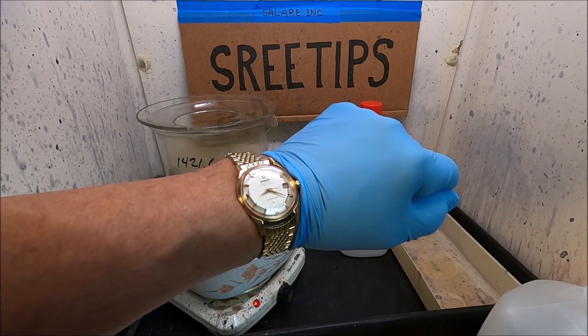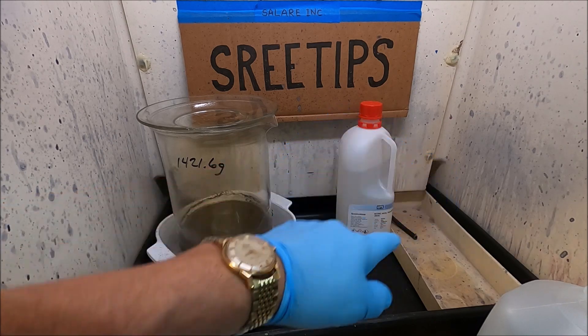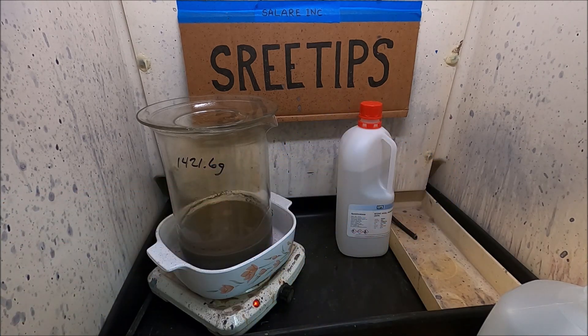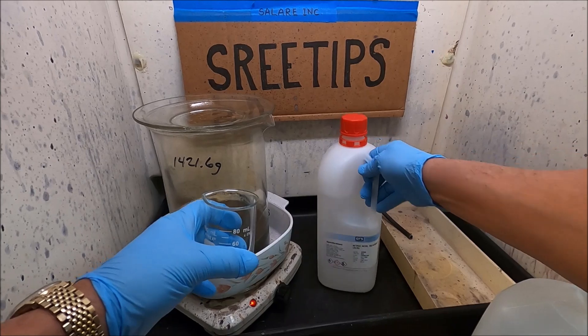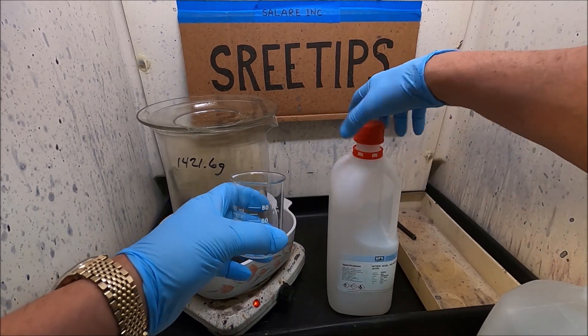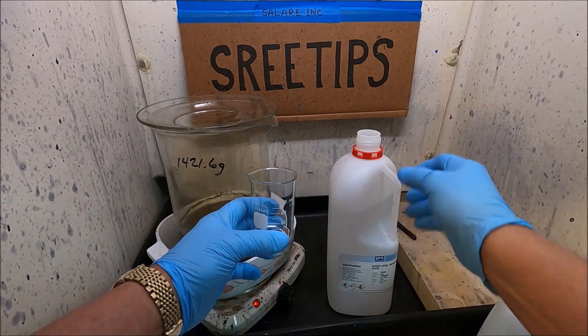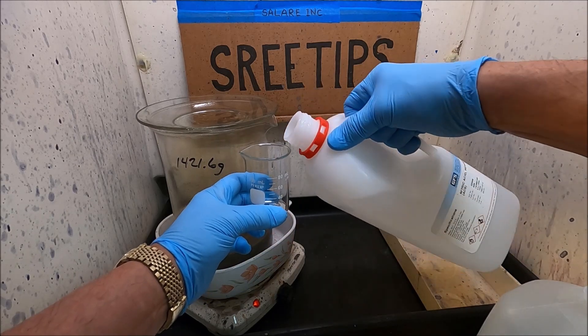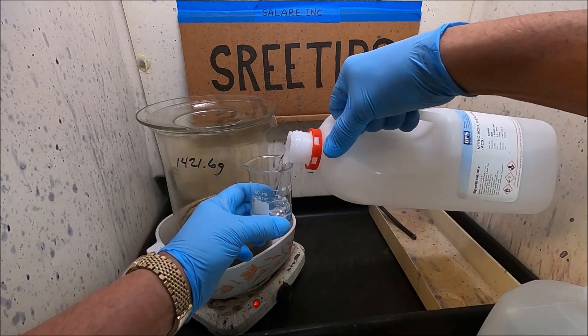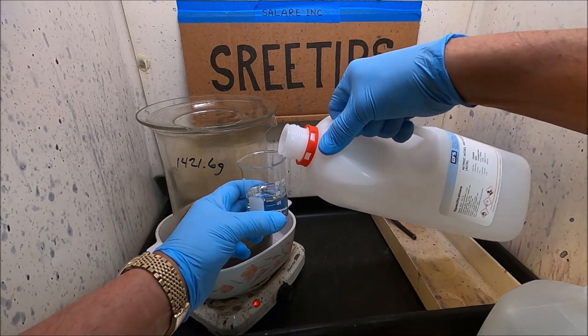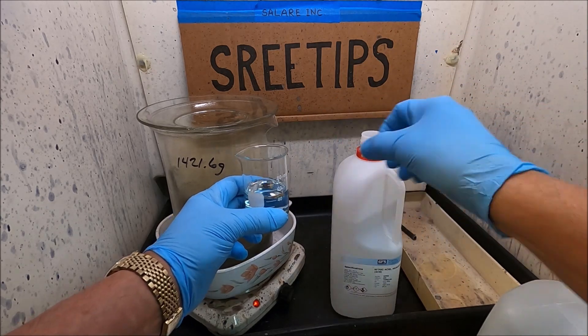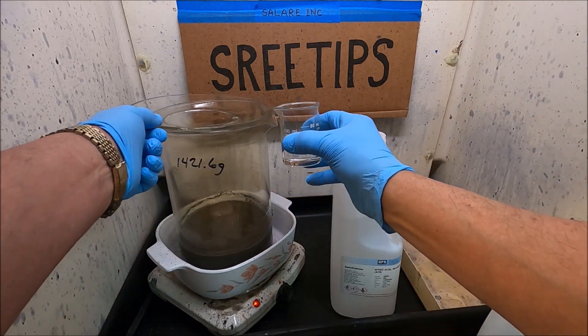The time is 8:20. We've been boiling with some dilute nitric for about 50 minutes. I'm going to add a little bit more nitric acid to it, about 50 milliliters here going in, and we'll let this stay on heat a little longer and see if we can extract some more stuff out of here.